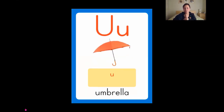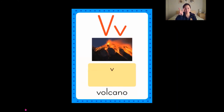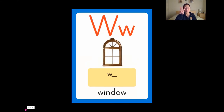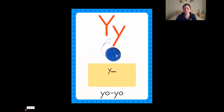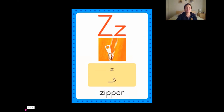U is for umbrella, umbrella. V is for volcano, volcano. W is for window, window. X is for box, box. Y is for yo-yo, yo-yo. Z is for zipper, zipper.